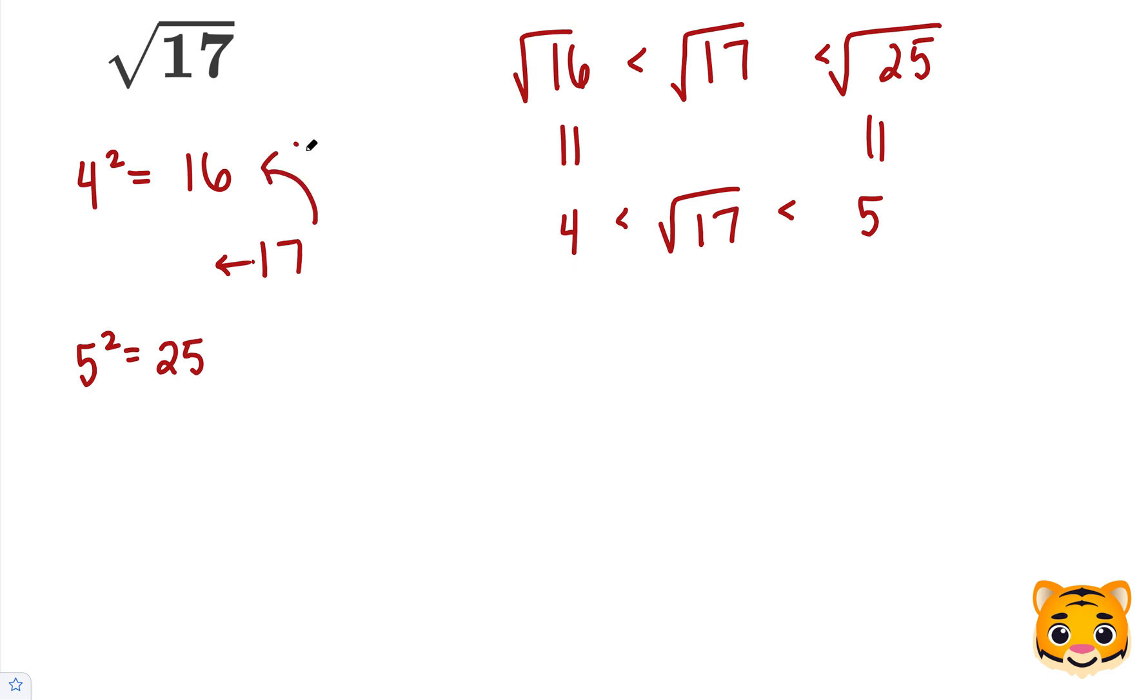Because 17 is very close to 16, we can pick something closer to 4, such as 4.1. Let's see what 4.1 squared is, and if it's close to 17, then we'll have our solution.